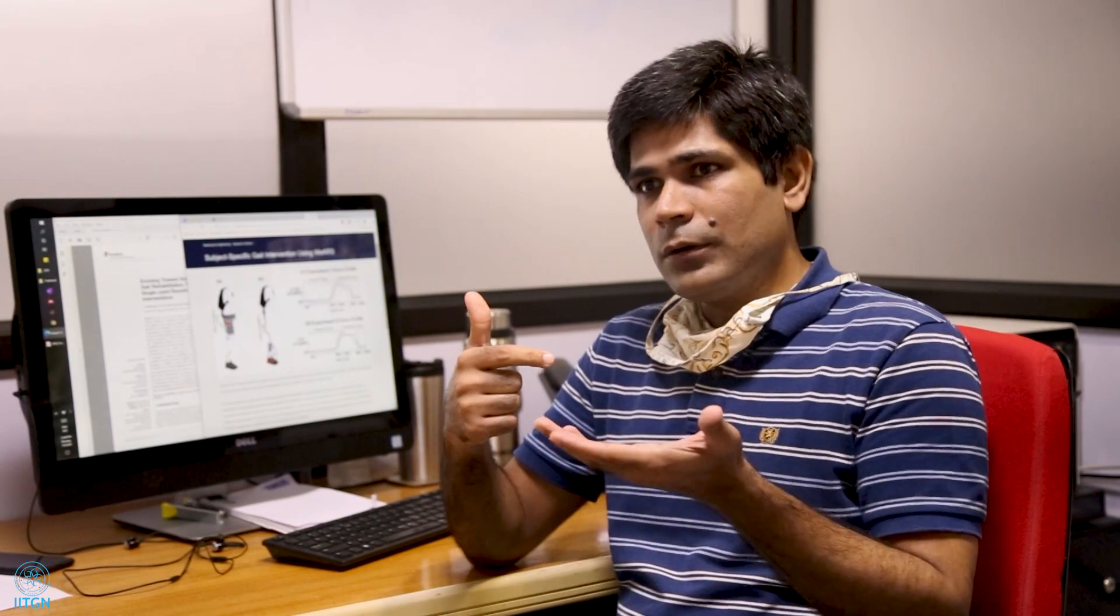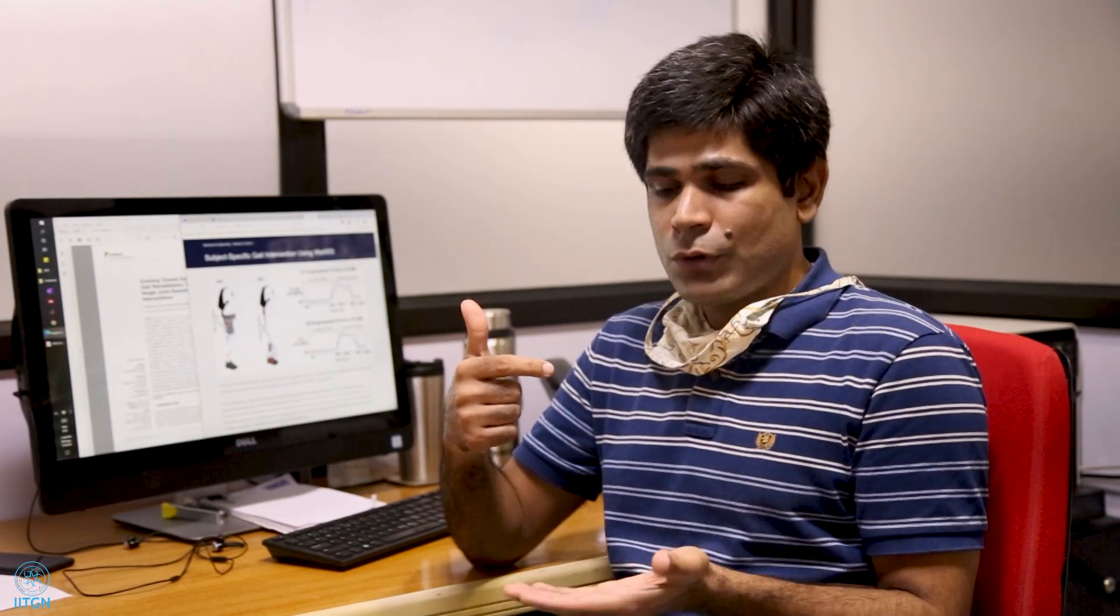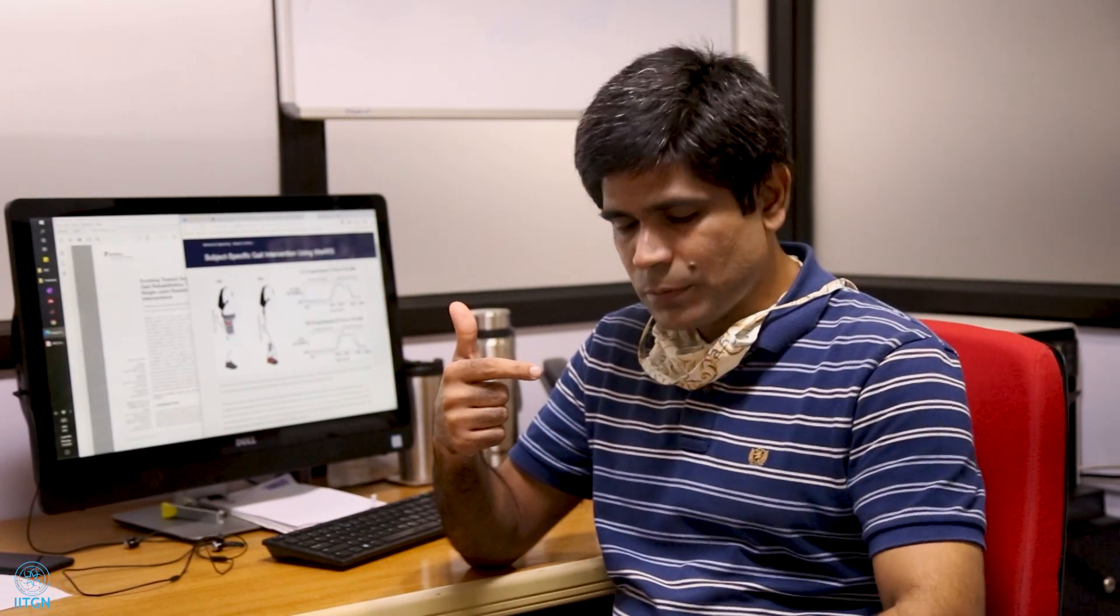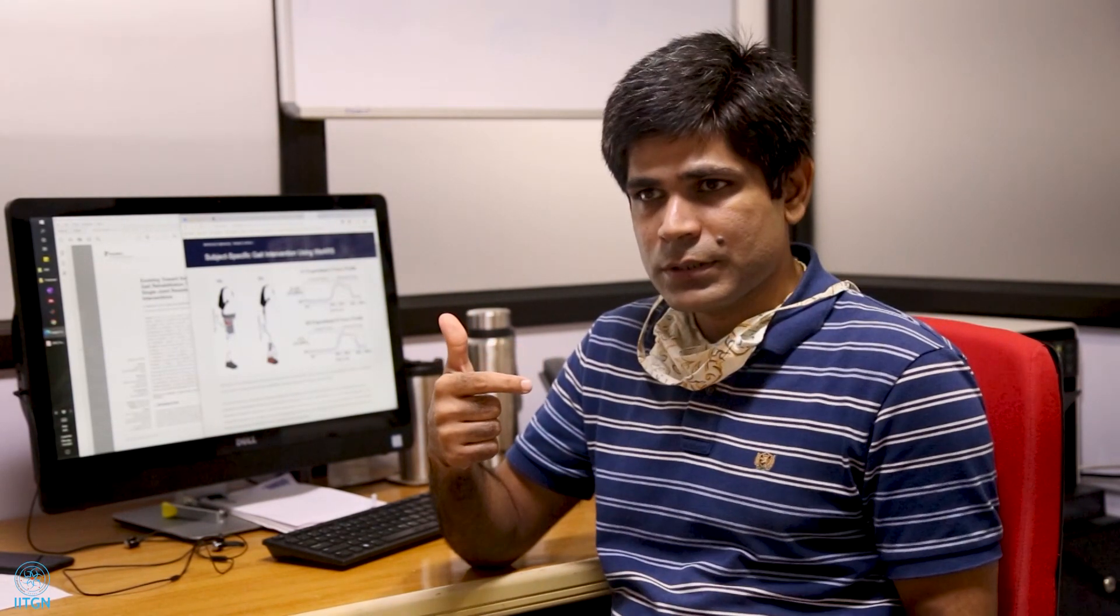One good example is stroke patients who, because of the stroke incident, their muscle becomes weak and they are unable to walk. One of their legs, they are unable to actuate their joints.